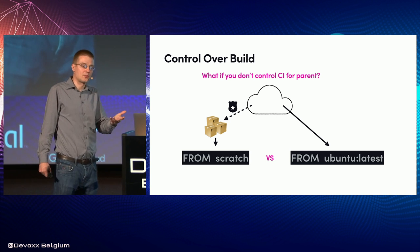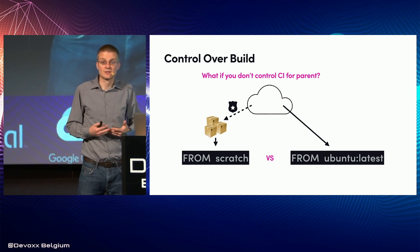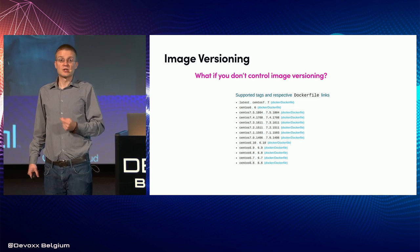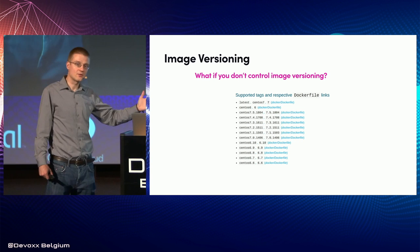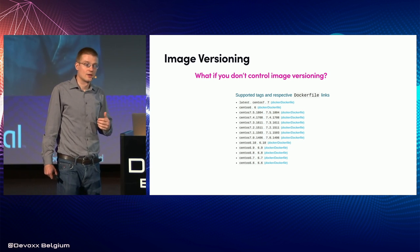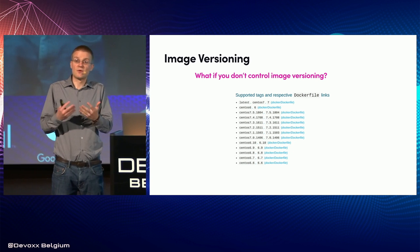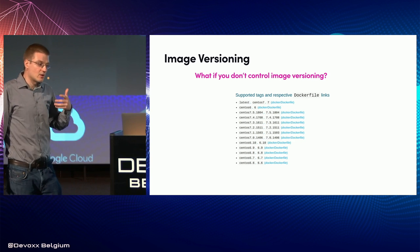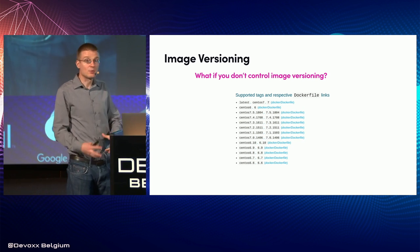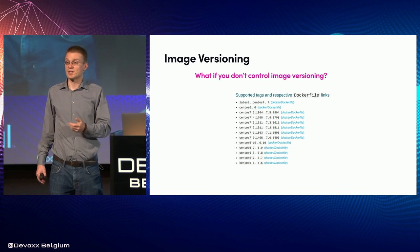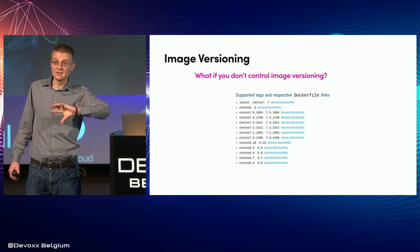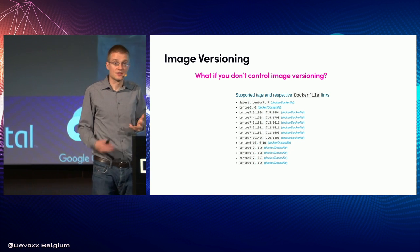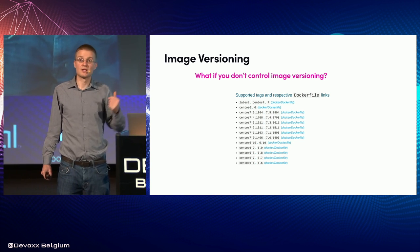Ideally, you wouldn't reinvent the wheel and you would depend on a distribution's official Docker images. The other thing we controlled was versioning. By controlling versioning, we're able to generate pull requests, and these pull requests make sense to a developer when they see them — there's an actual code change going on, a version bump. Distributions usually publish official Docker images that have descriptive version tags. The image can change out from under you and you won't know it unless you're checking the SHAs in Docker Hub or in the Docker registries.